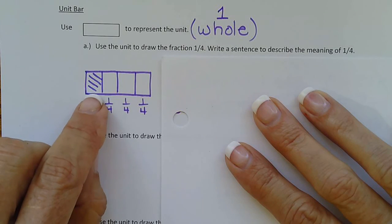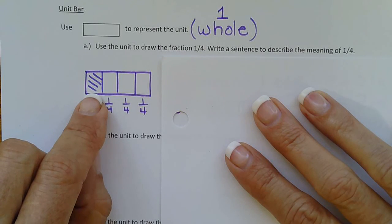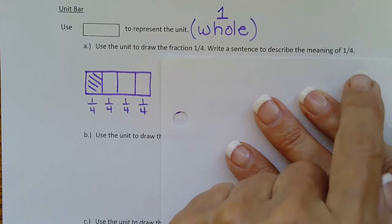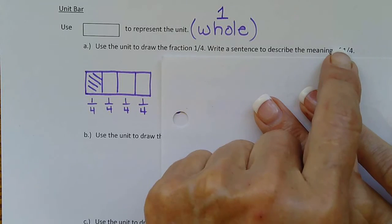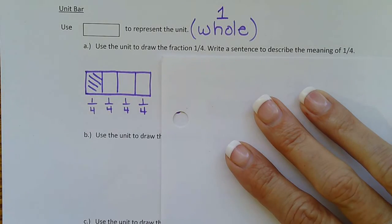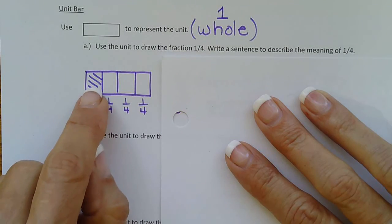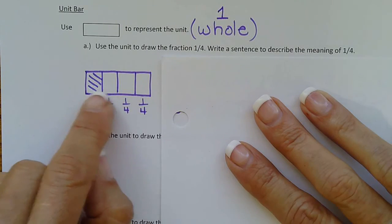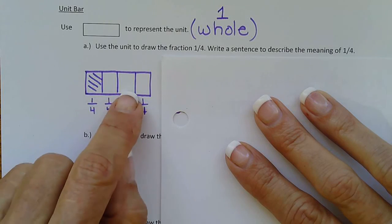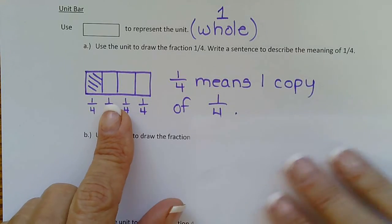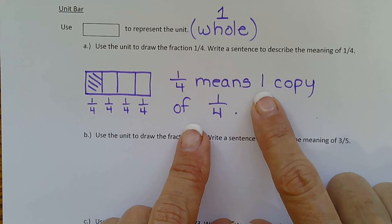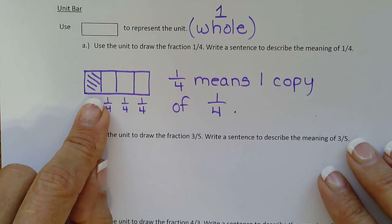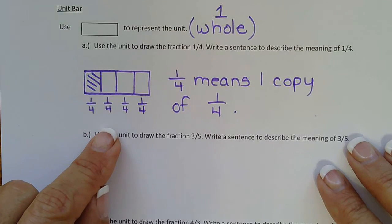And so to represent one-fourth, we'd shade in one piece. So they want us to describe the meaning of one-fourth, remember it's our copies language. So one-fourth means one copy of one-fourth. If it was two-fourths, we'd say two-fourths means two copies of one-fourth. If it was three-fourths, then we'd say three-fourths means three copies of one-fourth. But this is just one-fourth, so we'd write one-fourth means one copy of one-fourth. And you can see we only have one shaded, so that's one copy of one-fourth.